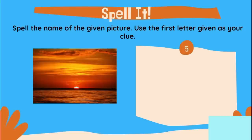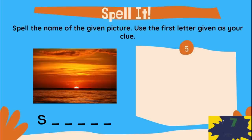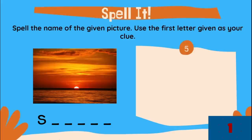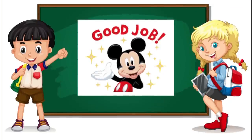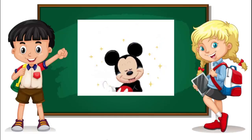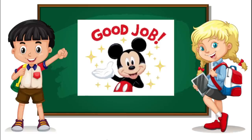And last picture — what do you call this one? This word starts with letter S. What do you think is the correct word? Type now your answer. And the correct word is sunset, S-U-N-S-E-T. If this is your answer, very good. If you get five correct answers, good job kids. Let's proceed to our next activity.